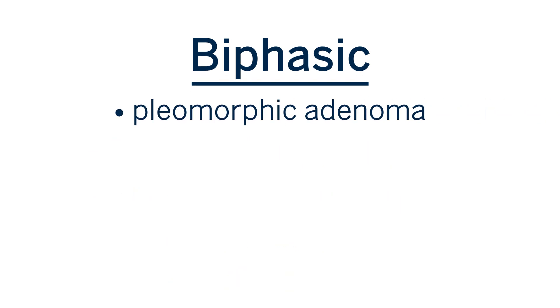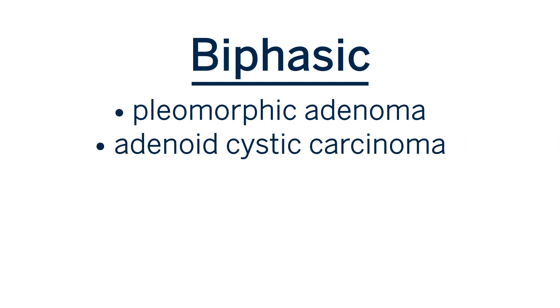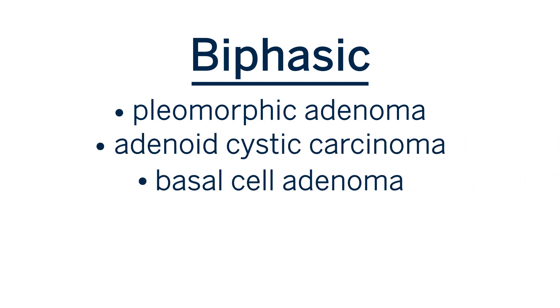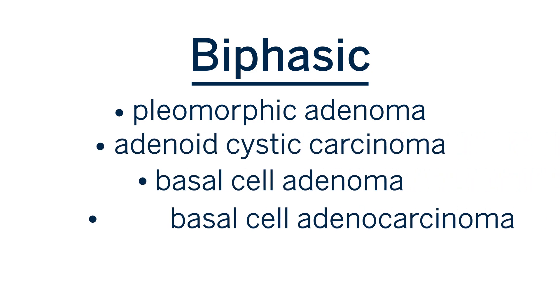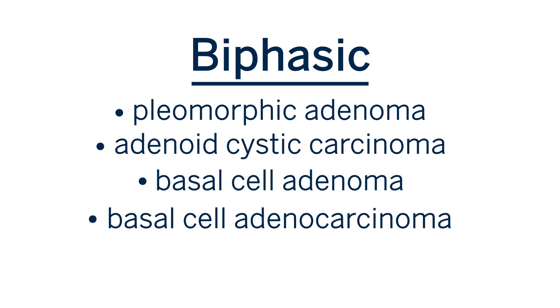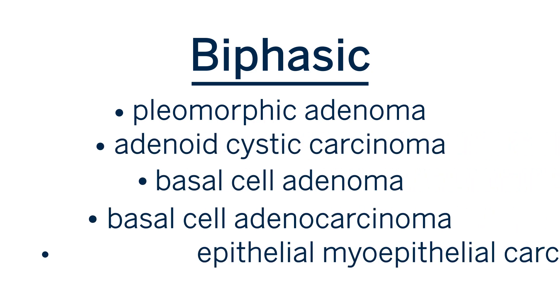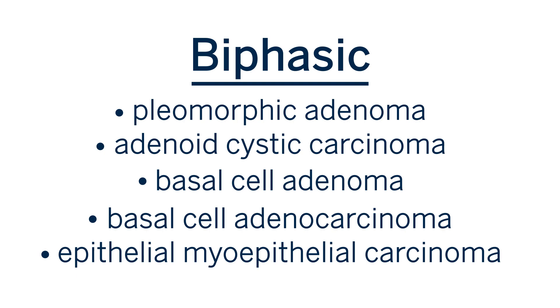Biphasic tumors include pleomorphic adenoma, adenoid cystic carcinoma, basal cell adenoma, basal cell adenocarcinoma, and epithelial-myoepithelial carcinoma. So if you see that biphasic phenotype, your differential diagnosis is limited to those entities — it's really helpful to appreciate that.